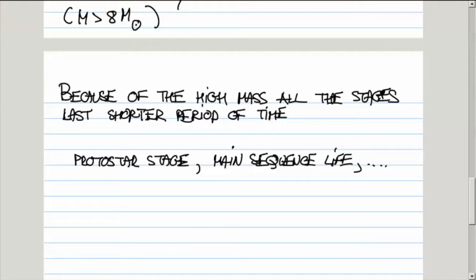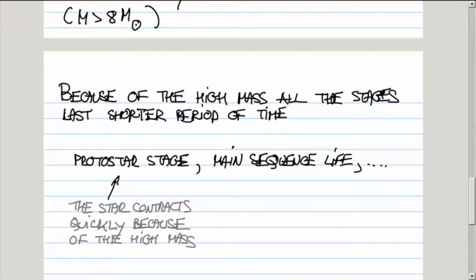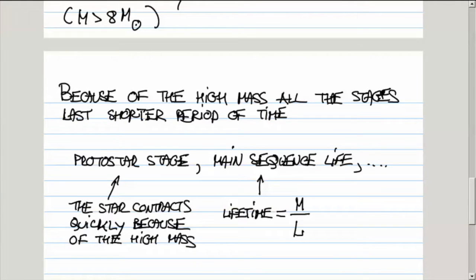The protostar stage is not very long because the star contracts quickly because of its high mass. Then the lifetime in the main sequence is proportional to the fuel available — that is the mass of the star — and inversely proportional to its energy output, that is the luminosity. For main sequence stars, the luminosity goes as mass to the power 3.5. The lifetime scales with mass as one over mass to the power 2.5. The bigger the mass, the shorter is the main sequence stage. Everything happens much faster.